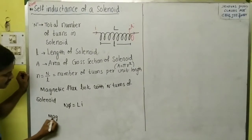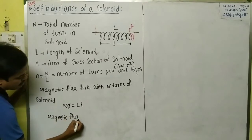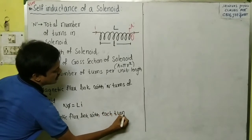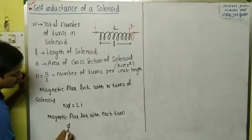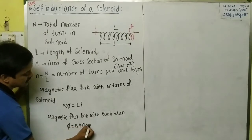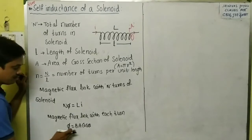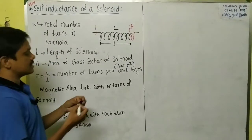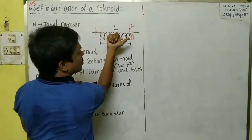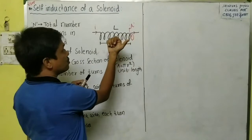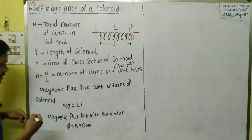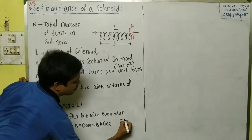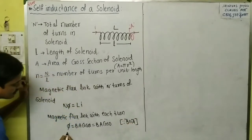The magnetic flux linked with each turn of the solenoid is φ = B·A·cosθ. Since the magnetic field is along the axis of the solenoid — according to the right-hand thumb rule — and the area vector is also along the axis, B is parallel to A, so cosθ = cos0° = 1. Therefore φ = B·A.